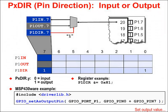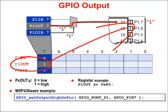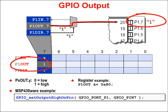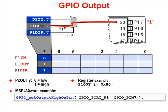Now that we've set a pin as an output, how do we set the output value? That's done using the OUT register in the hardware. Putting a 1 in the output register — as long as direction is set as output — drives a 1 on the pin. Put a 0 in the OUT register and that's what we get on the pin. There's a GPIO function for that: GPIO set output high on pin, and also GPIO set output low on pin — each allowing us to control the output register.